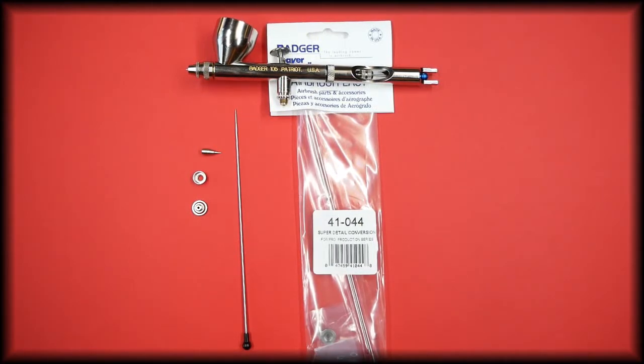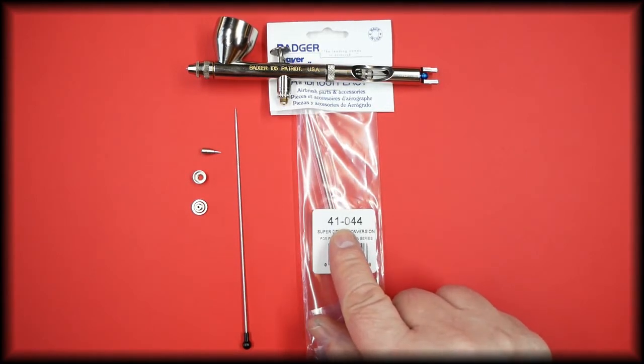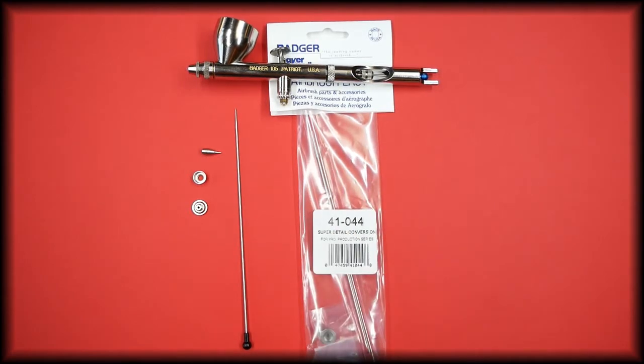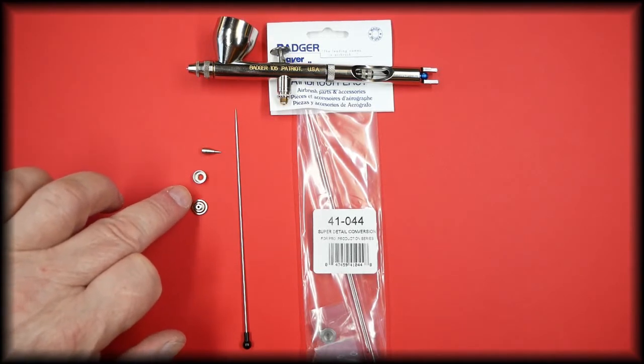In this video we're going to be talking about the super detail conversion kit for the Badger Patriot 105. The kit part number is 41-044. There are four parts to this kit: the needle, the tip, and the two-part spray regulator.